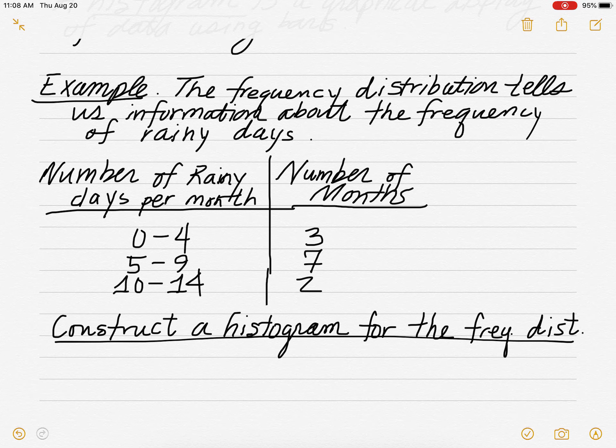All right, on the right-hand side, you see your frequency here, which tells us how many months you have this number of rainy days. So there are 3 months with only 0 to 4 rainy days, 7 months with 5 to 9 rainy days, and only 2 months with 10 to 14 rainy days. So what we want to do, we want to construct a histogram for this frequency distribution.